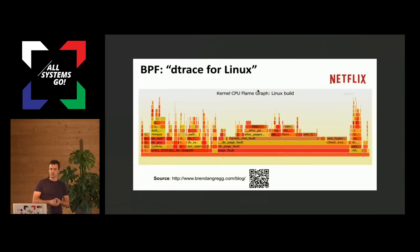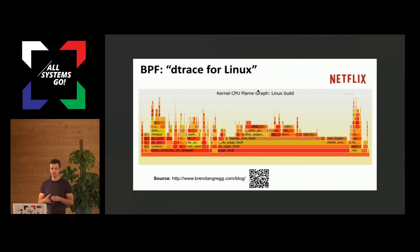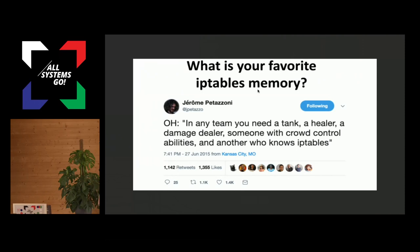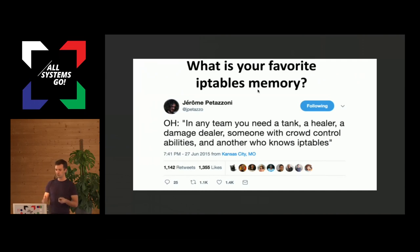DTrace was huge on Solaris and Linux never really had an equivalent tool. BPF, or BCC, or various other frameworks do more or less the same — using BPF for profiling and tracing. Netflix has lots of blog posts around this. Then there's IP tables — I really like this tweet by Jerome: 'In any team you need a tank, a healer, a damage dealer, somebody with crowd control abilities, and another who knows IP tables.' A lot of us in networking have been in a situation trying to debug a system with 10,000 IP tables rules, which turns out to be extremely difficult. With Cilium, we're trying to resolve this by not relying on huge sets of rules, but actual good logic.